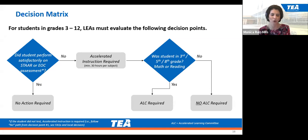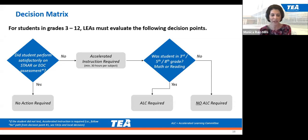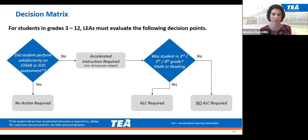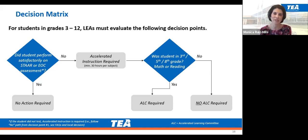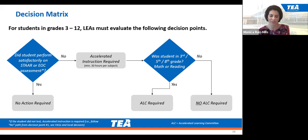We've received questions about what happens if the student did not test in spring 2021. The LEA can then administer an assessment aligned to the TEKS in the subject in which they would have tested. Once the LEA has determined which TEKS-aligned assessment to use, it is a local decision to determine if the assessment shows the student performs satisfactorily and whether accelerated instruction is required.